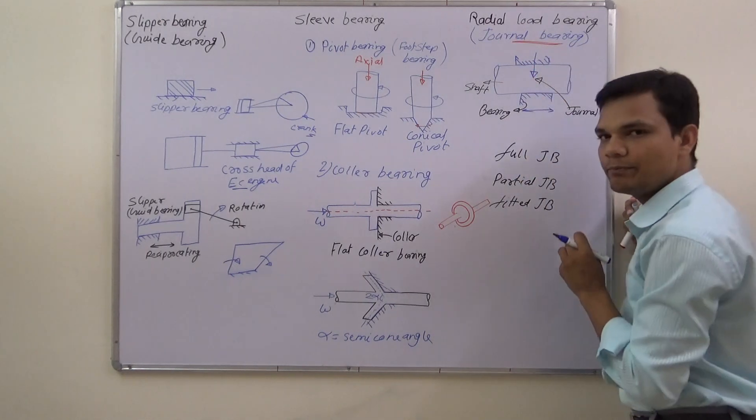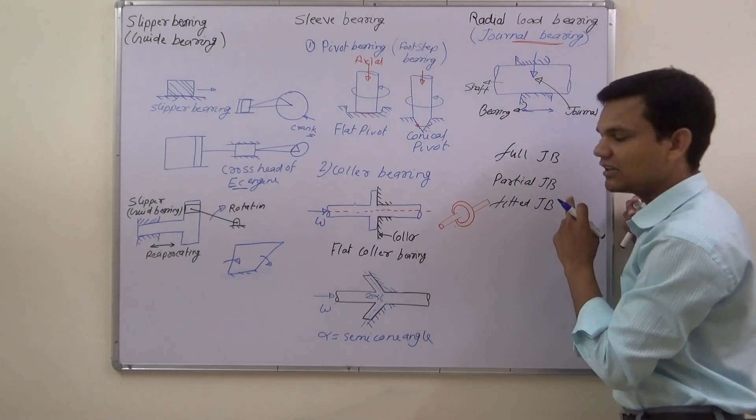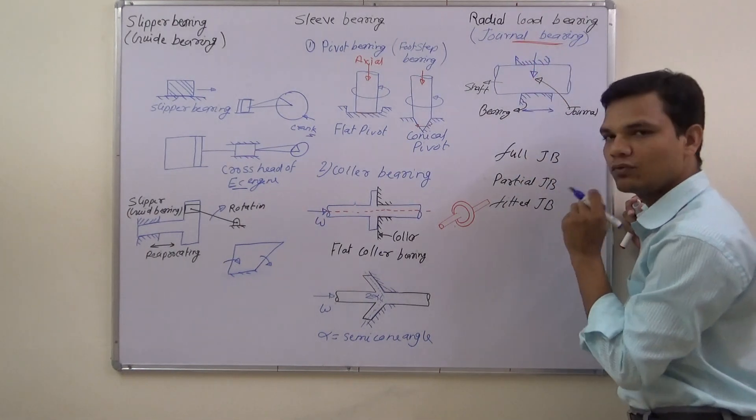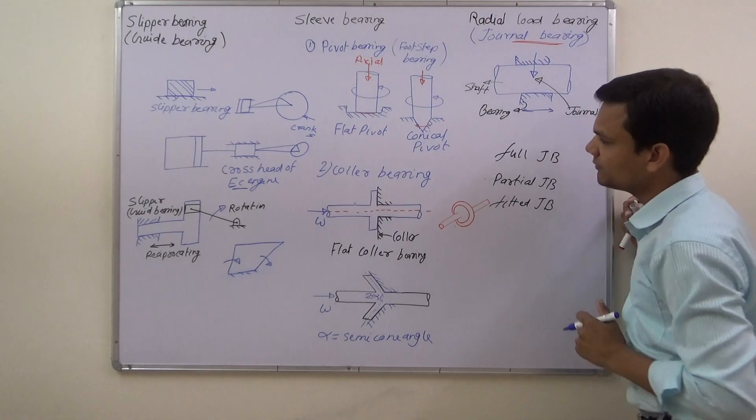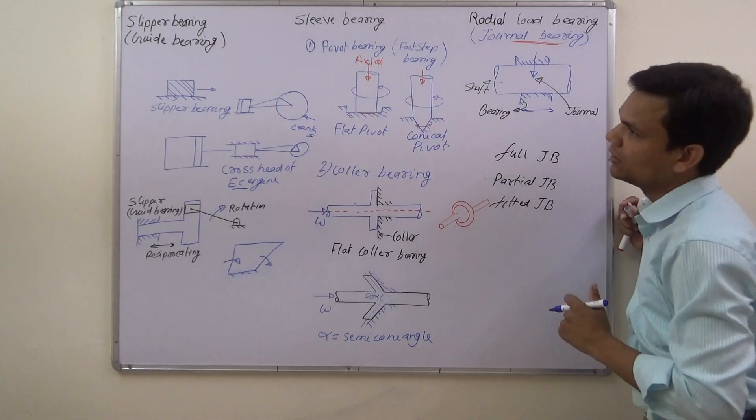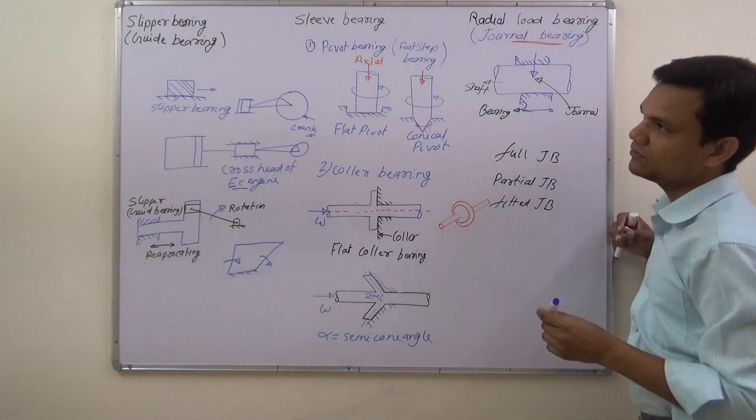Radial load bearing is of three types: partial journal bearing, full journal bearing, and fitted journal bearing.